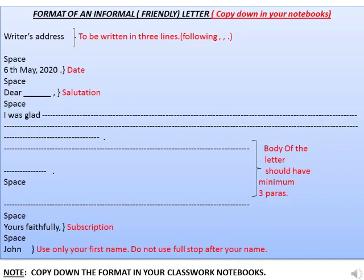Here, the format of an informal — that is, friendly — letter is given in this slide. We will also learn the format of a formal letter, but before that we will learn the format of an informal letter, which will be a little easier for you. You need to copy this down in your notebooks. First of all, on the very top left corner, you will write your address — that is, the writer's address. This informs the reader where you wrote the letter. It should be your full postal address, written in three lines. The red part is just for indication — no need to write it.